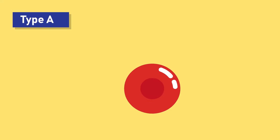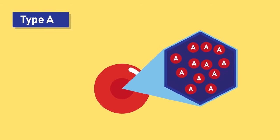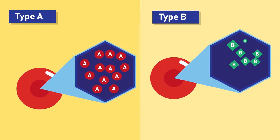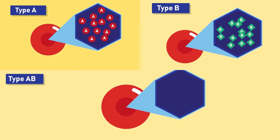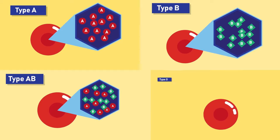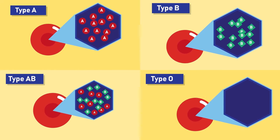Blood type A, if the red blood cell has only A molecules on it. Blood type B, if the red blood cell has only B molecules on it. Blood type AB, if the red blood cell has a mixture of both A and B molecules. Blood type O, if the red blood cell has neither A or B molecule.